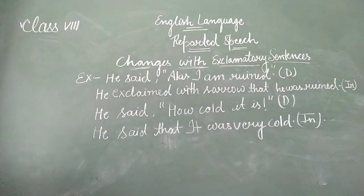So number one, we remove inverted commas by using that. Number two, we change reporting verb say or said into exclaimed with joy, sorrow, surprise, or anger. Number three, we remove the interjection oh or alas. And if the reported speech comes with what and how, we remove these words in indirect speech and we use verb, adjectives, and adverb to make the sentence meaningful.